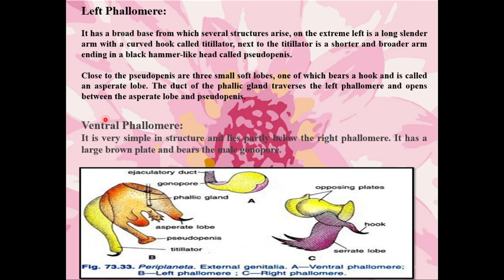The third one is the ventral phallomere. It is very simple in structure and lies partly below the right phallomere and partly below the left phallomere. It has a large brown plate and bears the male gonopore. These are the external genital organs or gonapophysis present on the last abdominal segment of the male cockroach, which help in copulation. They are of three types: left phallomere, right phallomere, and ventral phallomere.